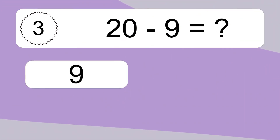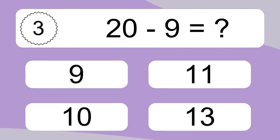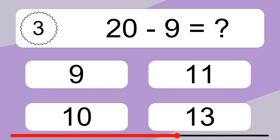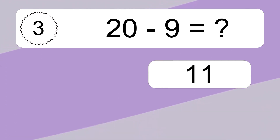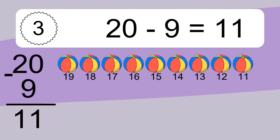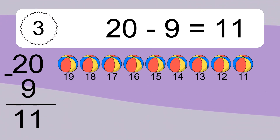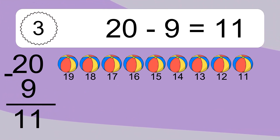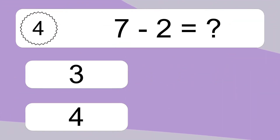20 minus 9 equals what? 20 minus 9 equals 11. Let's count it: 19, 18, 17, 16, 15, 14, 13, 12, 11.